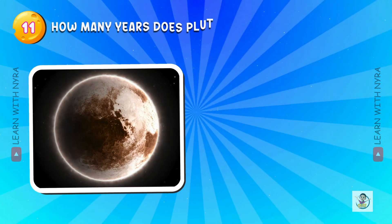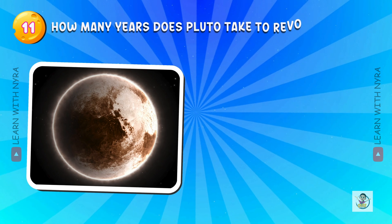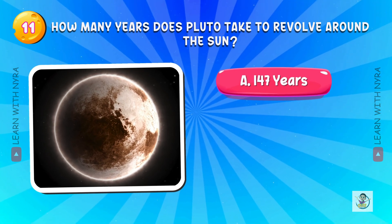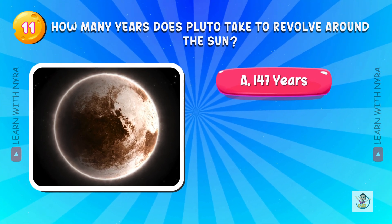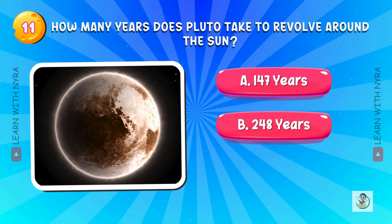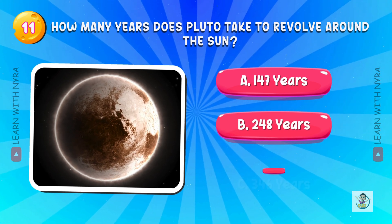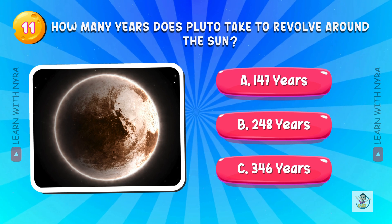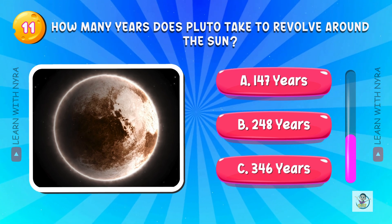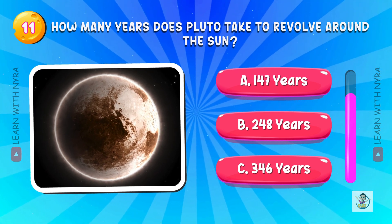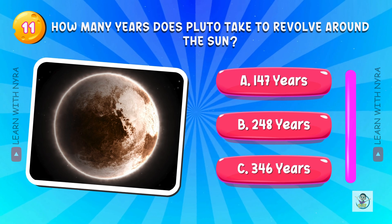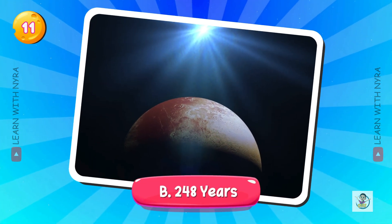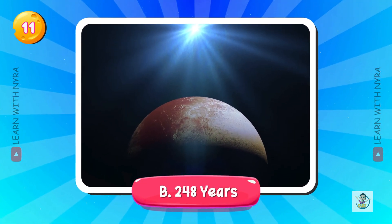How many years does Pluto take to revolve around the sun? A. 147 years, B. 248 years, C. 346 years. And the answer is B. 248 years.